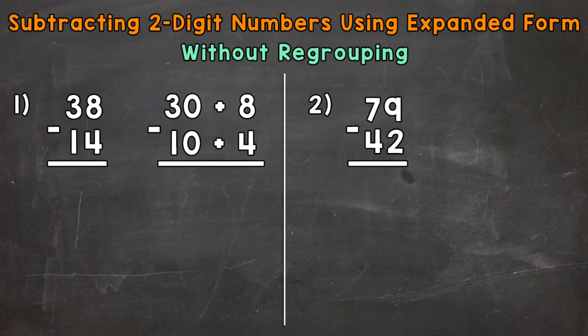So let's jump into number 1 where we have 38 minus 14. The first thing that we want to do, put these numbers in Expanded Form. Remember, Expanded Form, we show the value of each digit. For number 1, I already put these numbers into Expanded Form.